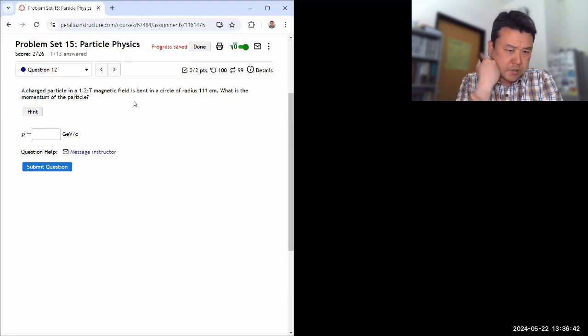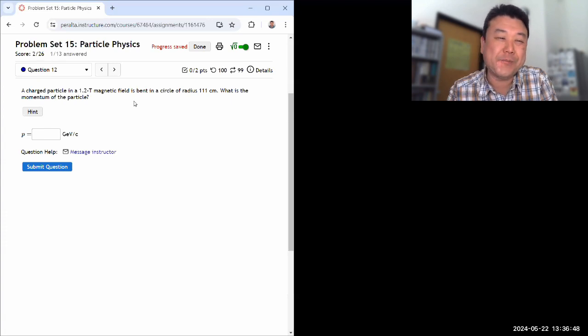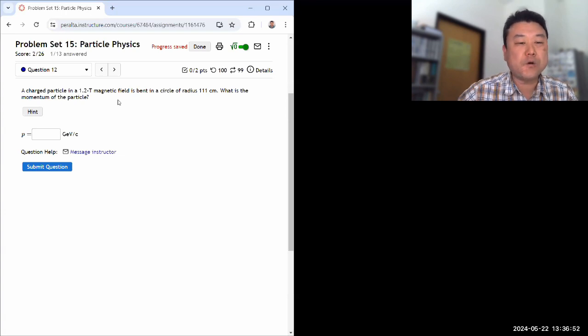So I wanted to do this question separately because it's kind of a throwback. It involves Physics 4A and 4B topics. It asks: a charged particle in a 1.2 tesla magnetic field is bent in a circle of some radius. It asks what is the momentum of the particle?